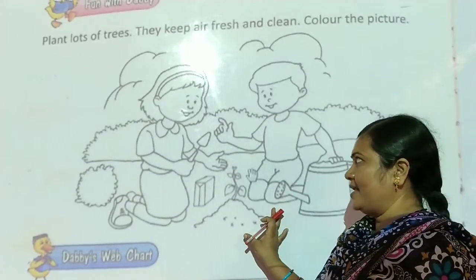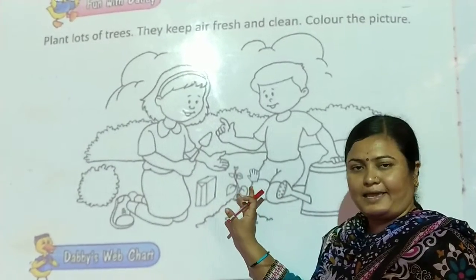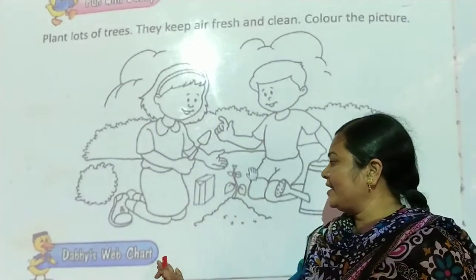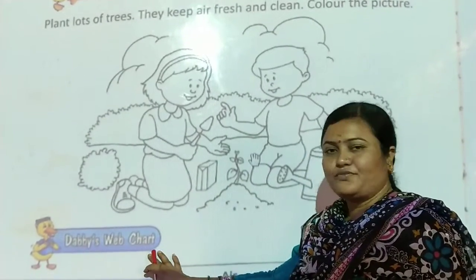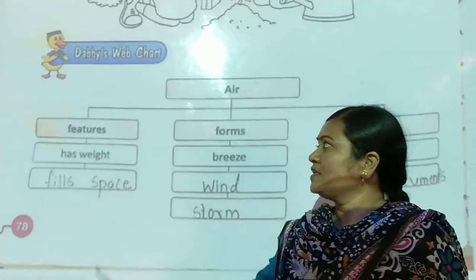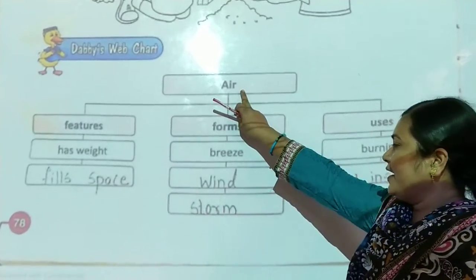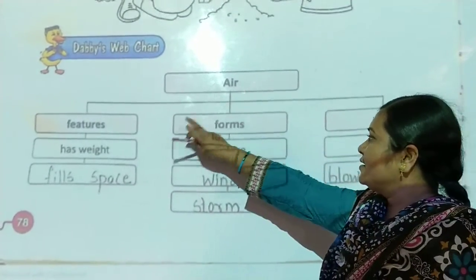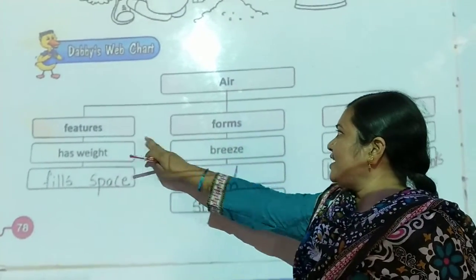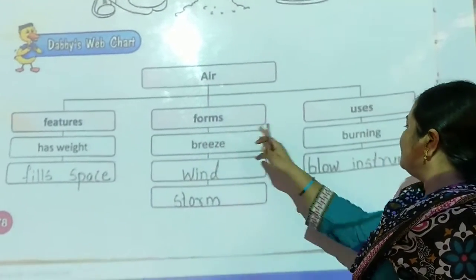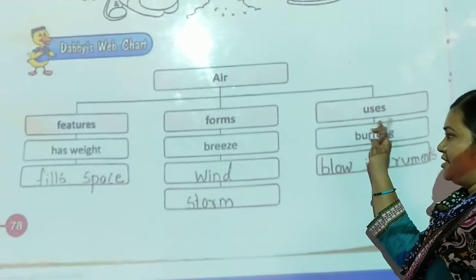Here is our next question. The next question is the Daddy finger chart — that is the feature. AIR features: forms and uses.